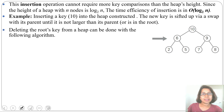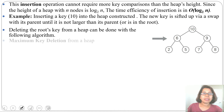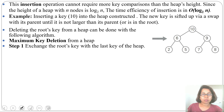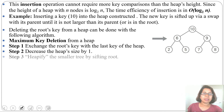To delete the root, there are three steps. First step: exchange the root key with the last key of the heap. Second step: decrease the heap size by one. Third step: heapify the smaller tree by shifting the root down.